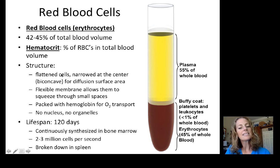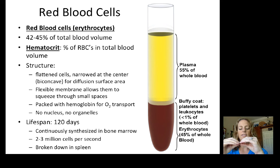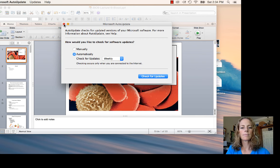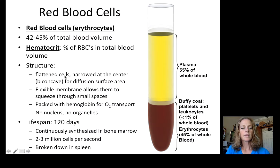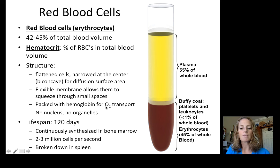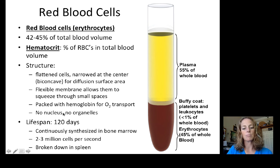Red blood cells have a very particular structure. They are flattened cells narrowed at the center — a biconcave shape, like a donut with the hole filled in — with a flexible membrane that allows them to squeeze through small spaces. They are absolutely packed with hemoglobin for oxygen transport, and because of this, red blood cells have no nucleus and no organelles.